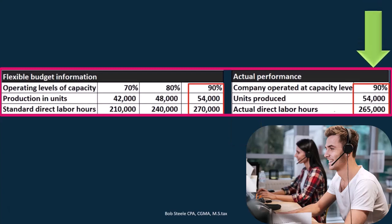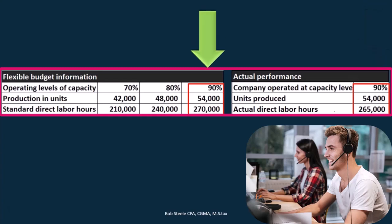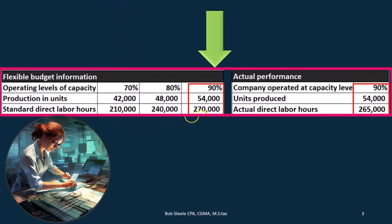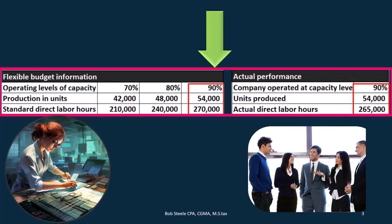We will always have some different level of production than we projected. We will have the fixed budget when we plan, but when something actually happens we will need to make the budget flexible to get more detail on how we did at that capacity level. For example, if we budgeted at 70% capacity to produce 42,000 units but actually produced 54,000 units at 90% capacity, the cost for direct labor is clearly going to be higher.